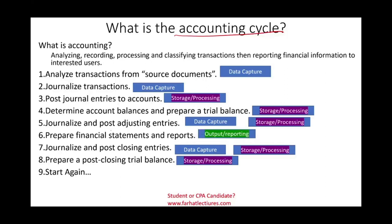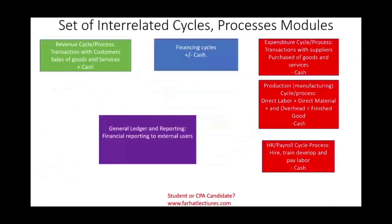Step six is the output, or the financial reporting process — producing the financial statements. Then the process starts again. Another way to look at the accounting cycle is as a set of interrelated cycles, processes, or modules. For simplicity, we'll break it into four main cycles plus a general ledger and reporting cycle.